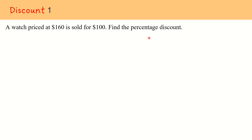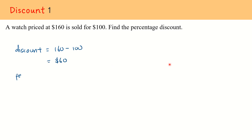In order to find out what is the percentage discount, we need to know what is the discount amount. Since the marked price is $160 and the sale price is $100, we can calculate the discount value which is $160 minus $100, and we get $60.